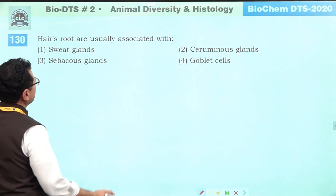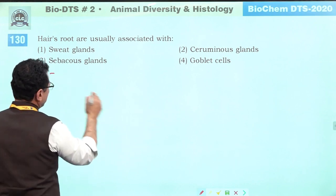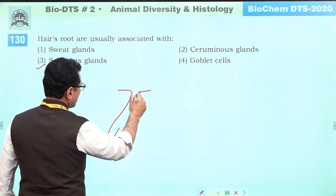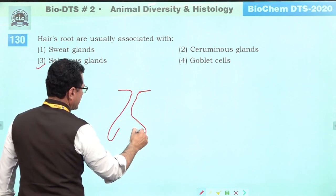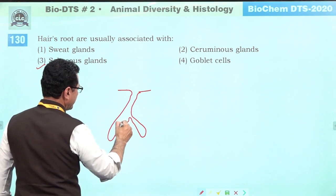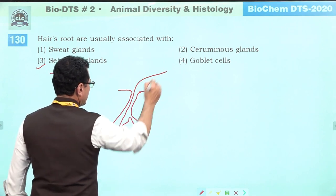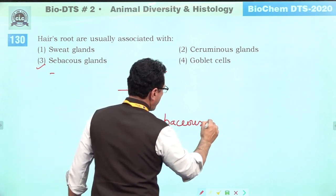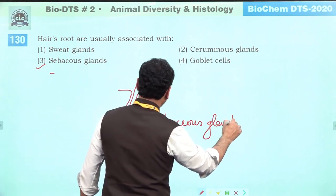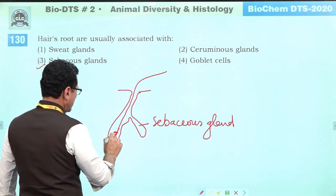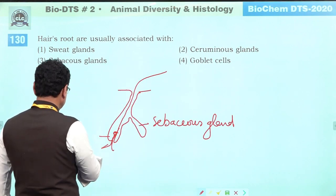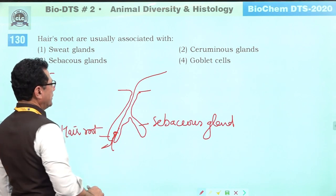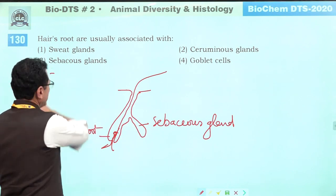Hair roots are associated with sebaceous glands. Sebaceous glands are located next to hair roots and produce oily secretions. Answer is three.